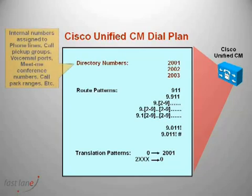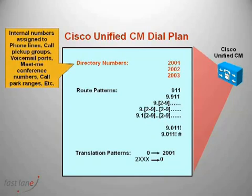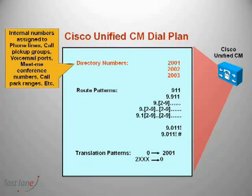Firstly, we have directory numbers. These are used for internal numbers. We can assign these to phone lines, call pickup groups, voicemail ports, meet-me conference numbers, call park ranges, etc.